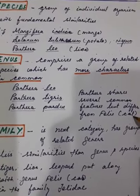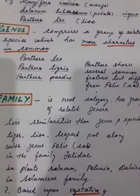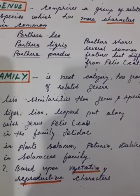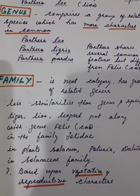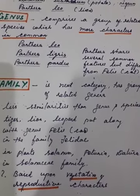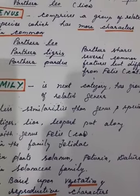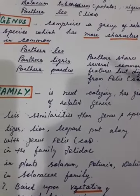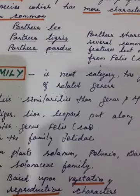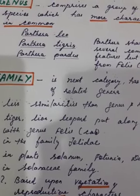Panthera and Felis (whose genus name refers to cats) differ from each other. The next taxon is family. Family is the next category and has a group of related genera — many genera are grouped under the same family. Family has less similarity than genus and species; as you go from the lowest rank to the highest, similarity is reduced.